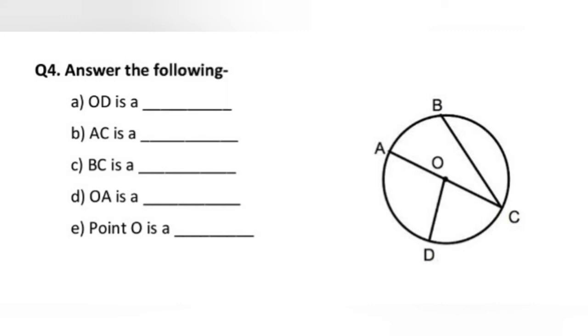Similarly, part B is, AC is a, now look here, A to C. This is the diameter of a circle. Right? So, write diameter here. In a similar way, identify all the parts and fill in the blanks. So, this is all about today's class.